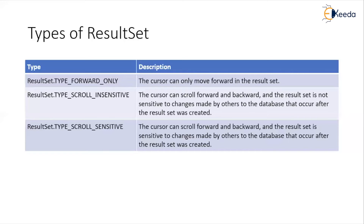The next type is type scroll sensitive. As 'scroll' specifies, we can scroll the cursor in forward and backward direction. However, this type of result set is sensitive to the changes made by others to the database that occur after the result set was created. For example, if I have created the result set and some other user then makes changes in the database table, those changes will be reflected in the result set I created, and I will have the updated data available for my application.